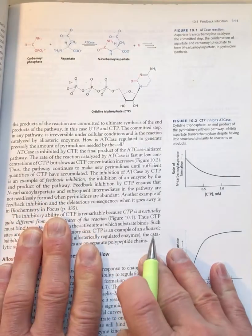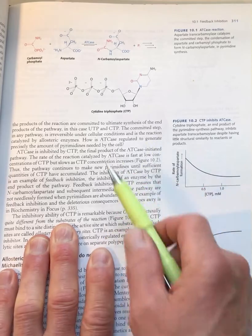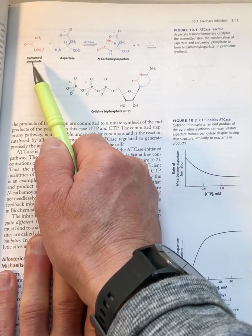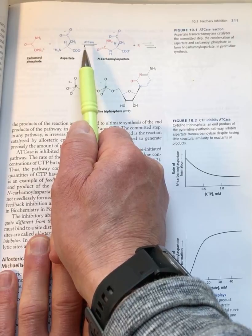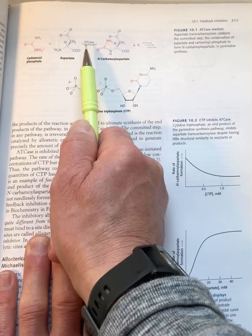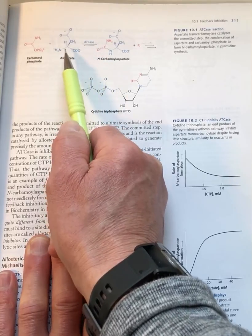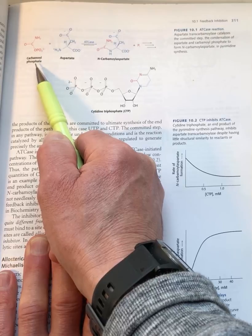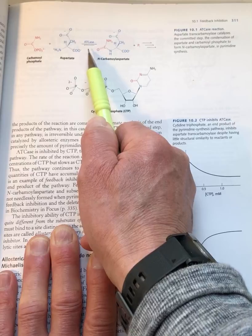Here we're looking at chapter 10.1 in the textbook, and here is the reaction catalyzed by aspartate transcarbamoylase, or abbreviated ATCase. You can see here the aspartate molecule, the carbamoyl phosphate molecule, and the product of this first step catalyzed by ATCase.